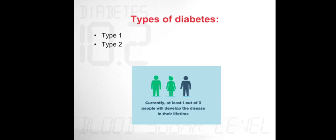Diabetes is of two types: Type 1 and Type 2. Currently, at least one out of three people will develop the disease in their lifetime.